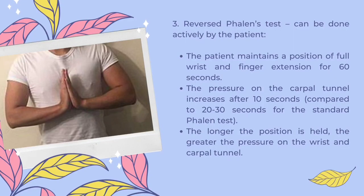Consequently, there is a reverse Valen test which can also be done actively by the patient. The patient needs to maintain a position of full wrist and finger extension for 60 seconds. The pressure on the carpal tunnel increases after 10 seconds, compared to the 20 to 30 seconds for the standard Valen test. The longer the position is held, the greater the pressure on the wrist and the carpal tunnel.